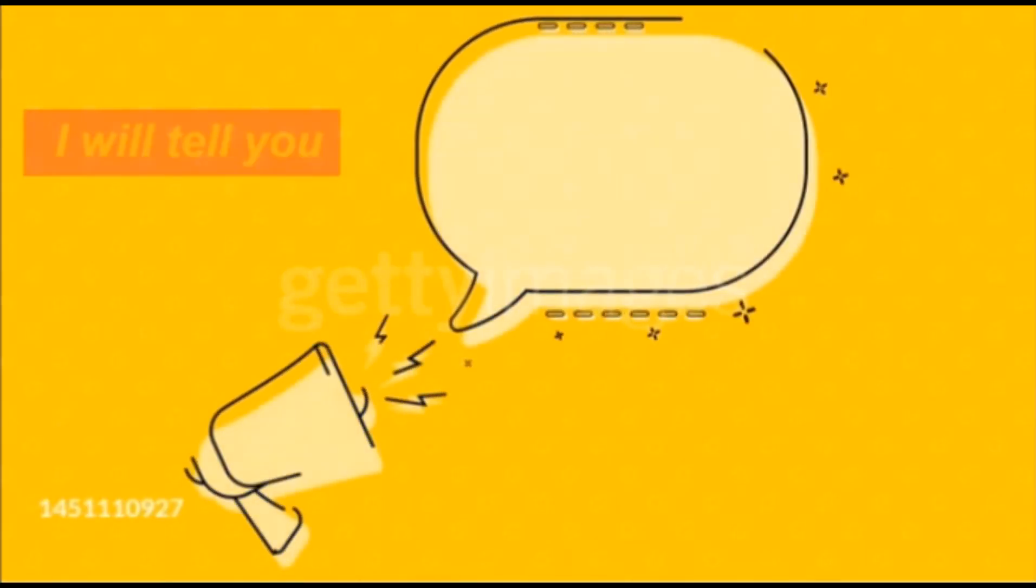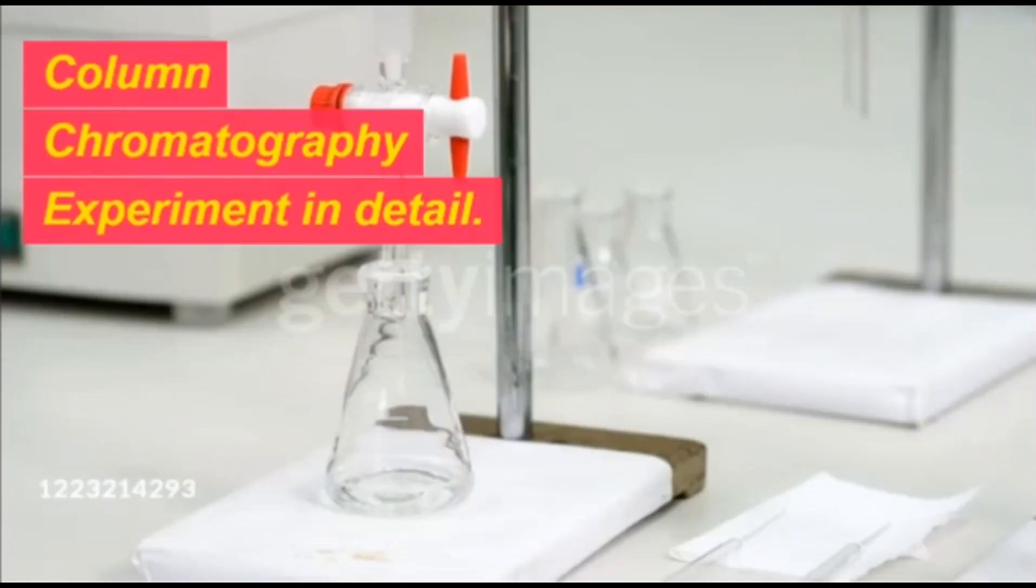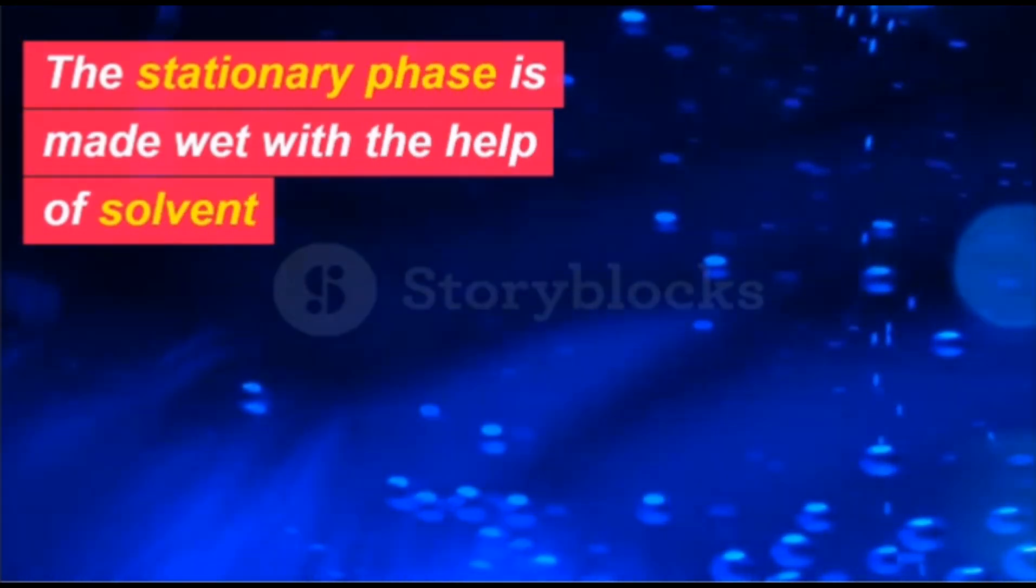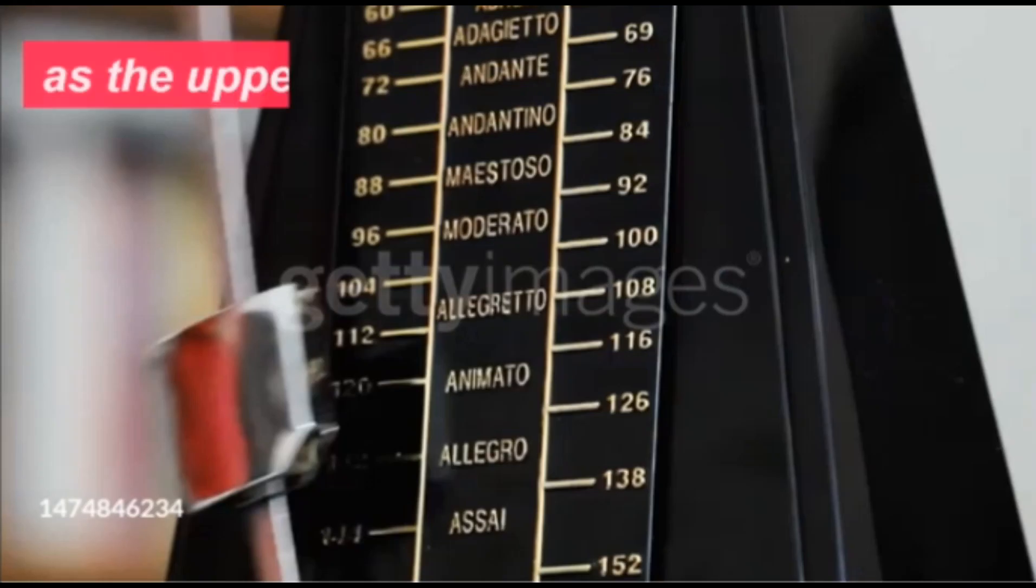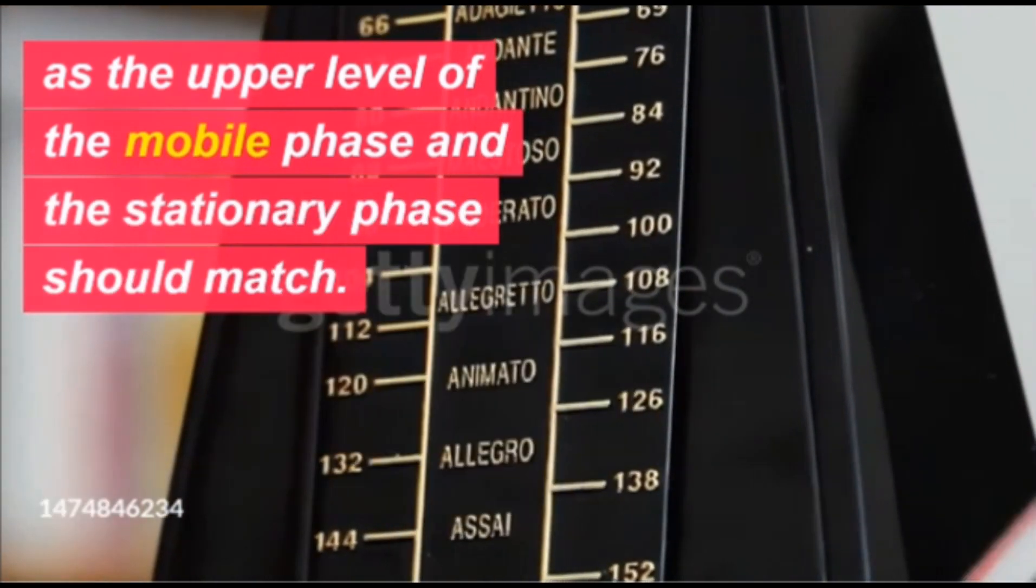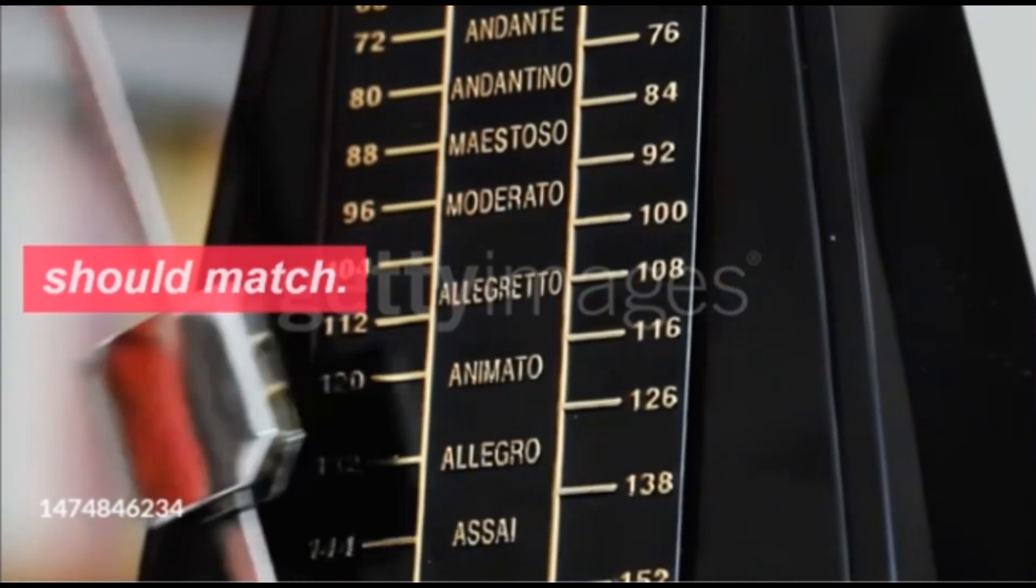In this video I will tell you column chromatography experiment in detail. The stationary phase is made wet with the help of solvent, as the upper level of the mobile phase and the stationary phase should match.